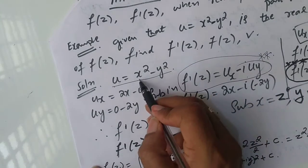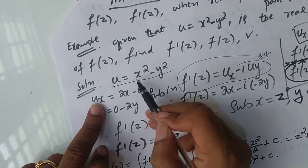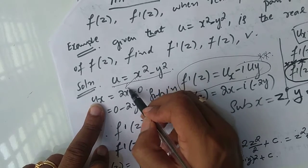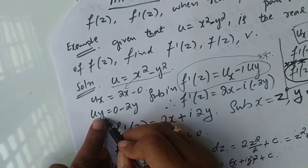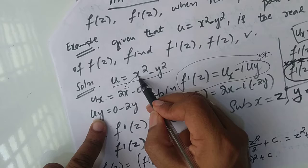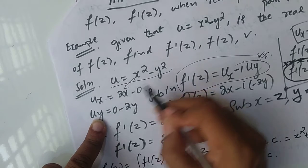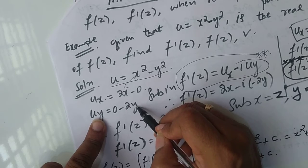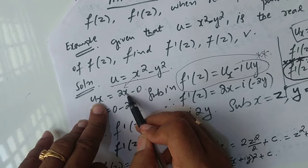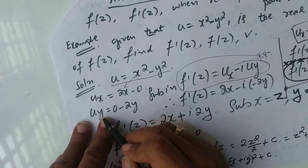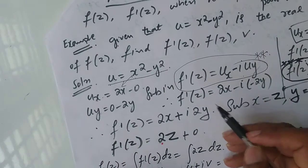Let us take a problem. The real part given is u = x² - y². Partially differentiate with respect to x: x² gives 2x, and since y is constant, -y² gives 0. So ux = 2x. Partially differentiate with respect to y: x is constant so x² gives 0, and -y² gives -2y. So uy = -2y.